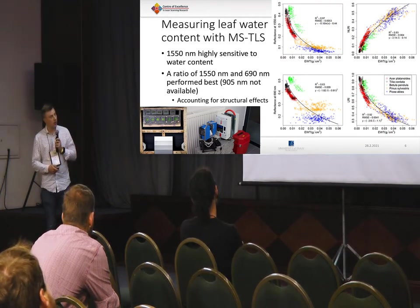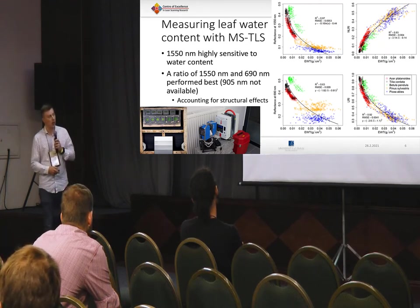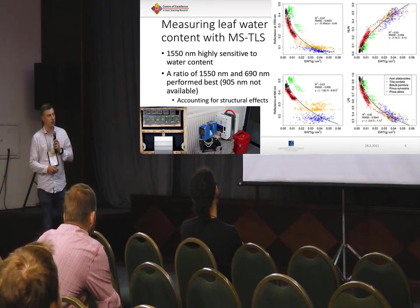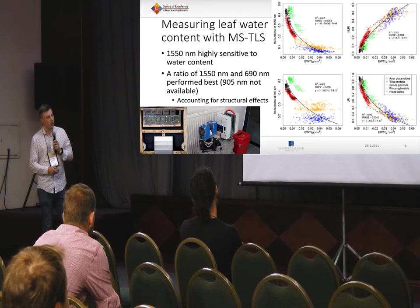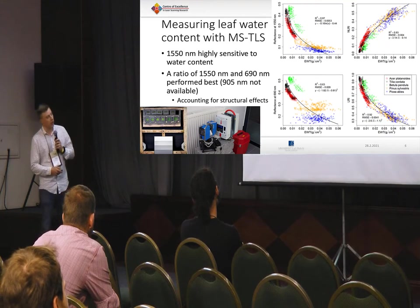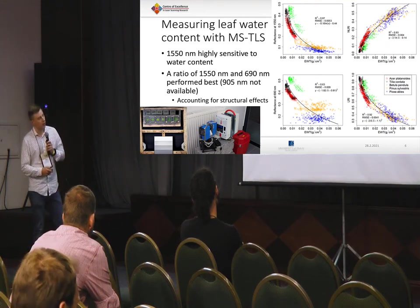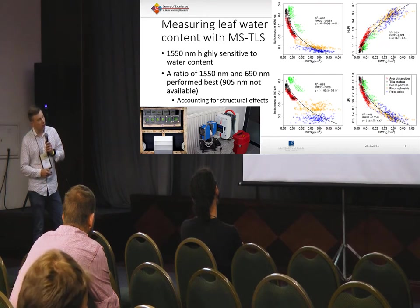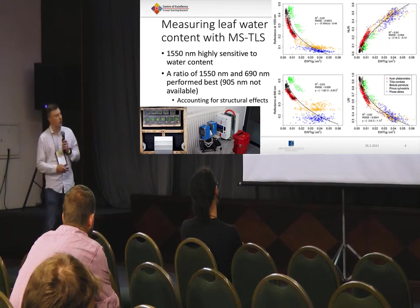One thing I would also like to show here — you can see how different species are quite differently lined up. At 690 nm you can spot pine over here, Norway spruce over there. We had Norway maple on red, small-leaved linden in black, and silver birch in green.